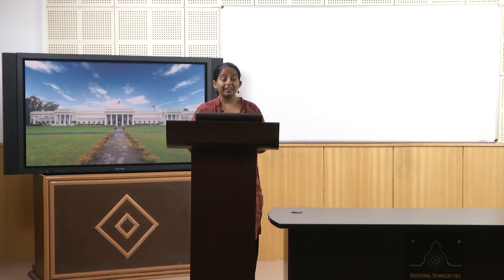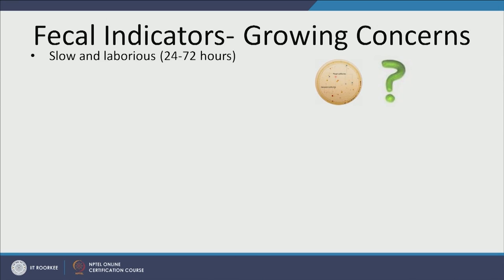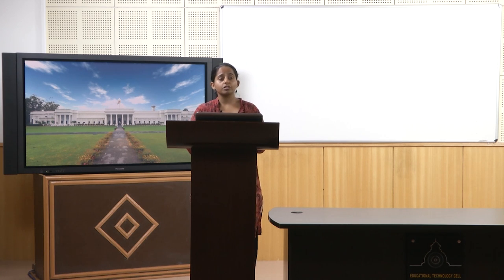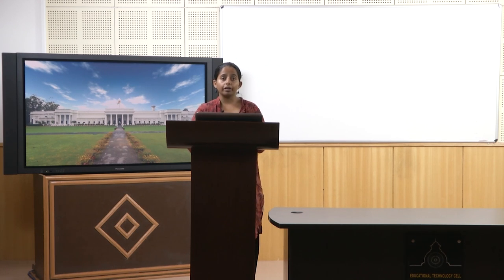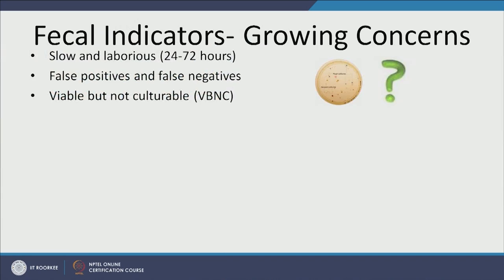However, there are growing concerns with fecal indicators. First, they are very slow and laborious — testing can take anywhere from 24 to 72 hours. Certain microbes like Mycobacterium, found in biofilms in drinking water distribution systems, can take up to 18 weeks to grow. These culture-based techniques require skilled personnel and have many false positives and false negatives. Not all E. coli or fecal coliforms present in water may grow on a plate, giving false negatives, while other microbes utilizing the same substrate can give false positives.